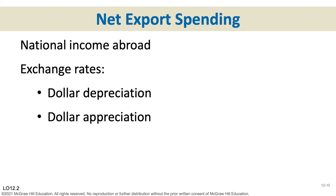The last shifter is net export spending. If our trading partners are experiencing prosperity, they'll buy more of our exports and aggregate demand shifts right. If they're in recession, they buy less of our stuff and AD shifts left. Exchange rates also matter: if the dollar depreciates against another currency, they can buy more of our stuff, so exports go up and imports go down — which shifts our aggregate demand curve to the right.